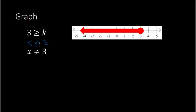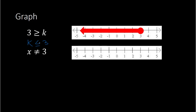Next we have x is not equal to 3, and we are told to graph this inequality. Well, if it's not equal to 3, that means it could be bigger than 3 or it could be smaller than 3. But the only thing is it cannot equal 3. So I will not shade in the number 3, but instead put a circle around it showing I'm not shading in the 3. This here would be my solution if I were to graph it.